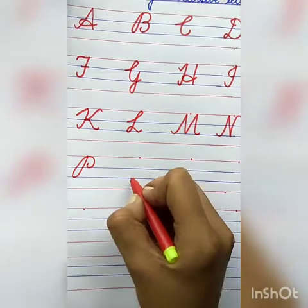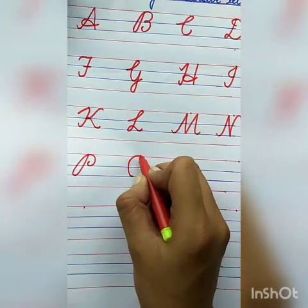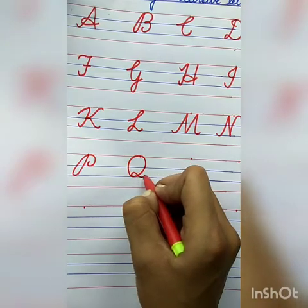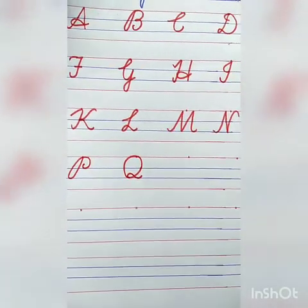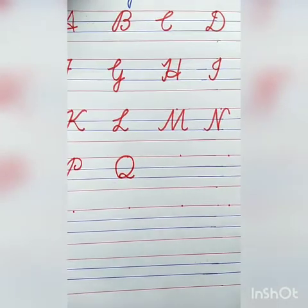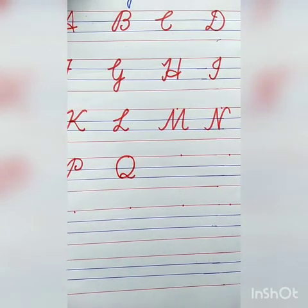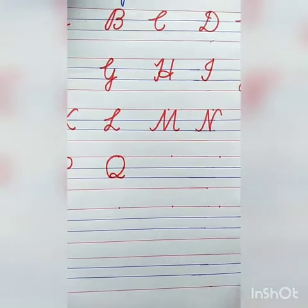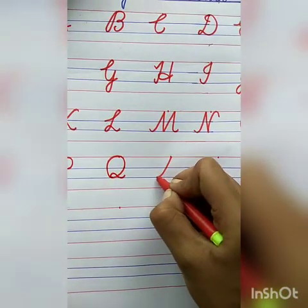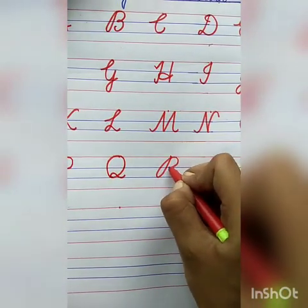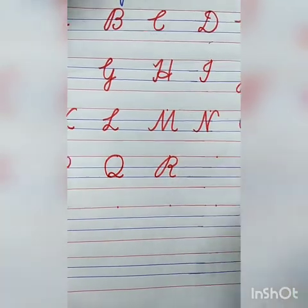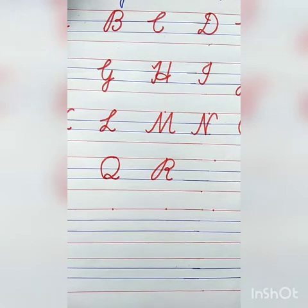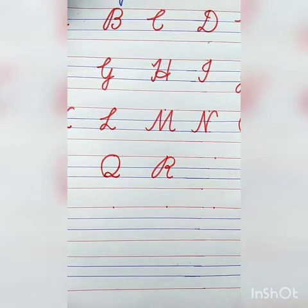Q — very good! Q for queen. Curve, curve, loop, curve line. The spelling of queen is Q-U-E-E-N, queen. Now tell me the next letter. R — very good! Slanting line, slanting line, curve, curve line. R for rabbit. The spelling of rabbit: R-A-B-B-I-T, rabbit.